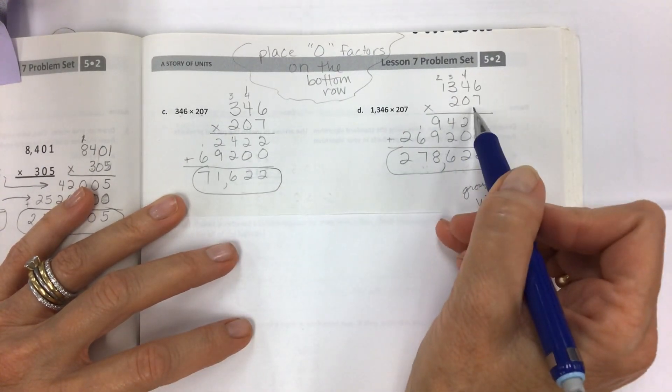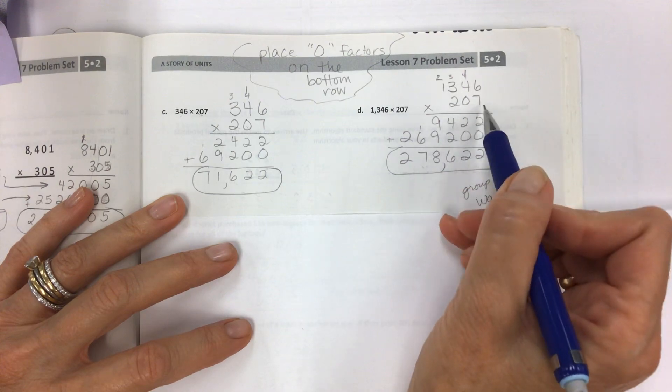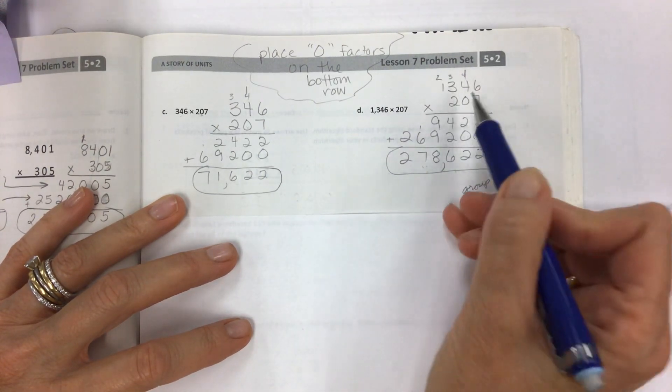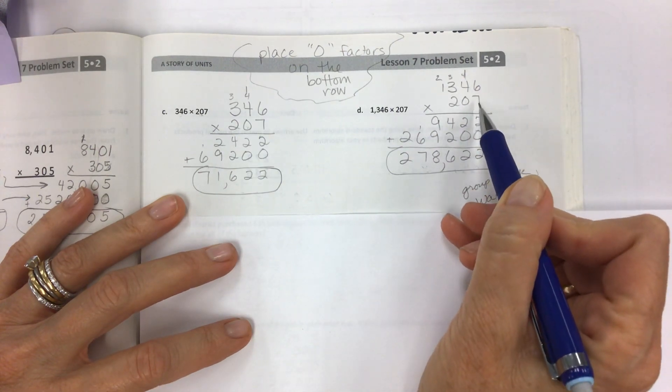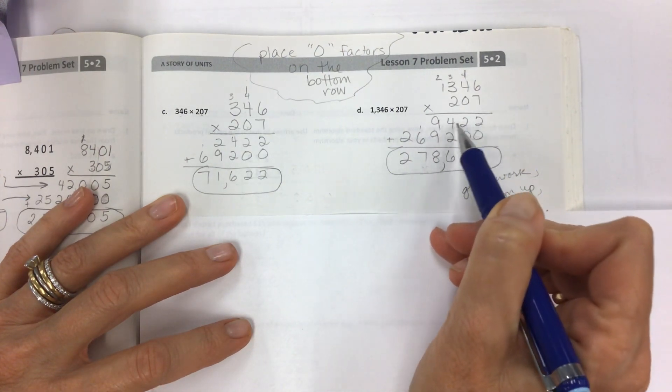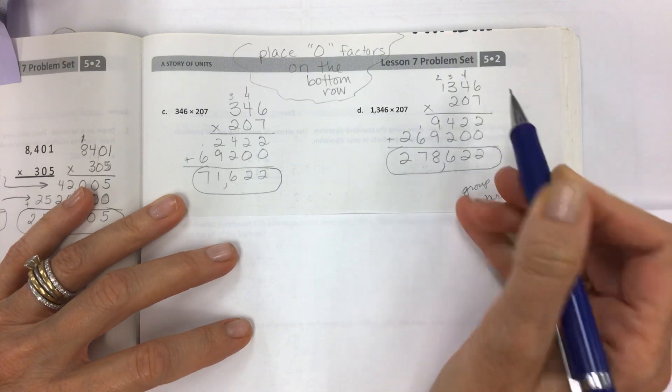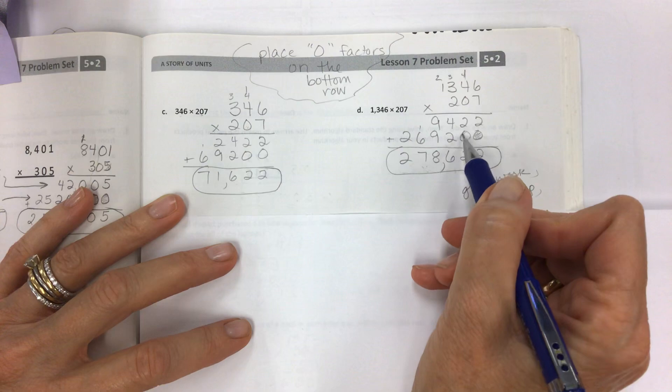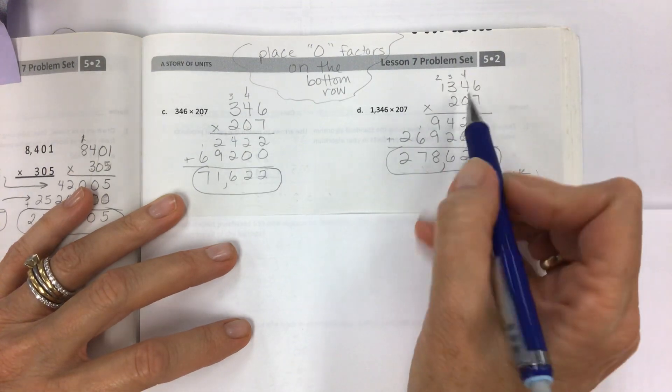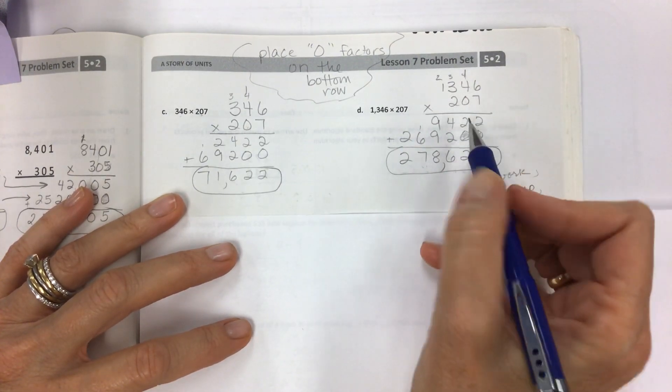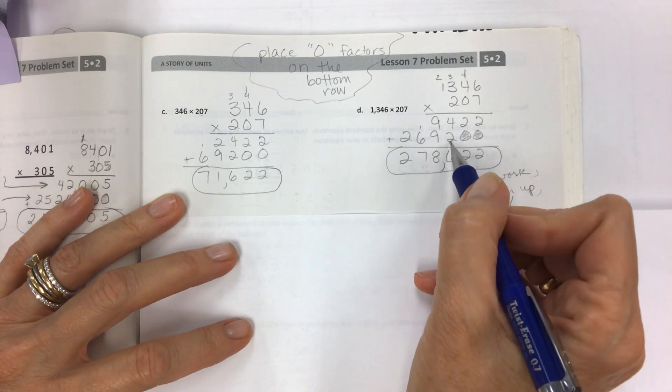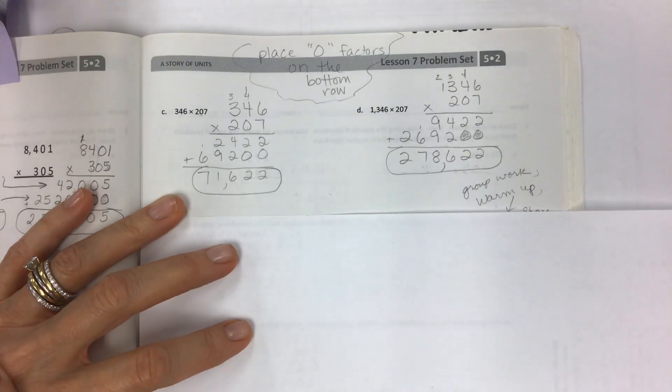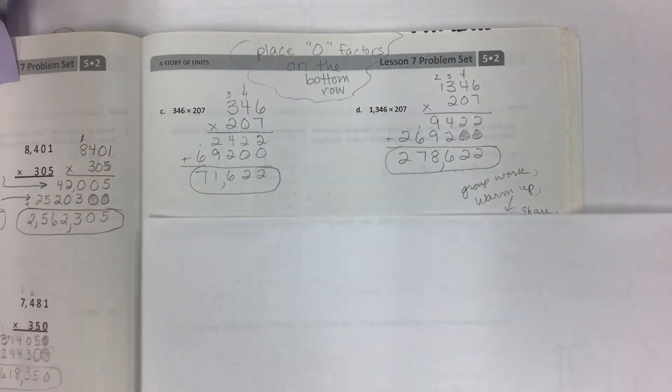And in this one you have to put it on the bottom anyway because you have a 4 digit by 3 digit. And that's really all there is to it. This is just straight multiplying. You have a zero. This is the 7 times 1,346 partial product. Then we have a zero for the 7 because that's the ones. And we have a zero for the zero. And then we're over here in the hundreds place 200 times 6. Okay. 1,200 and then carry the 1 and you go on. So that's really all there is to it. We have some word problems.